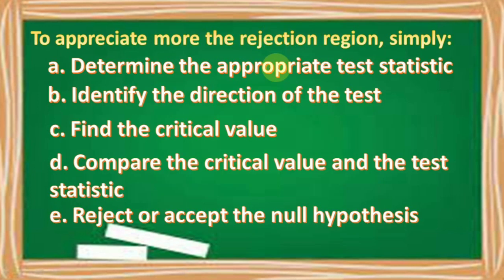To appreciate more the rejection region, simply follow the steps. A: Determine the appropriate test statistic. B: Identify the direction of the test. C: Find the critical value. D: Compare the critical value and the test statistic. And E: Reject or accept the null hypothesis.